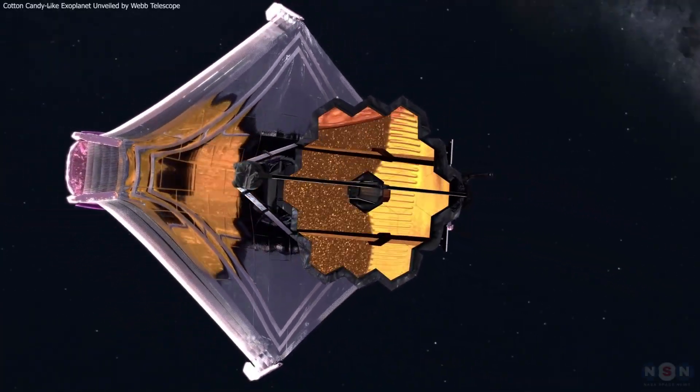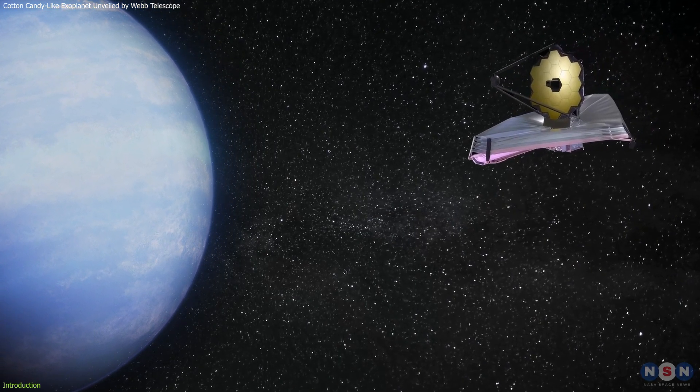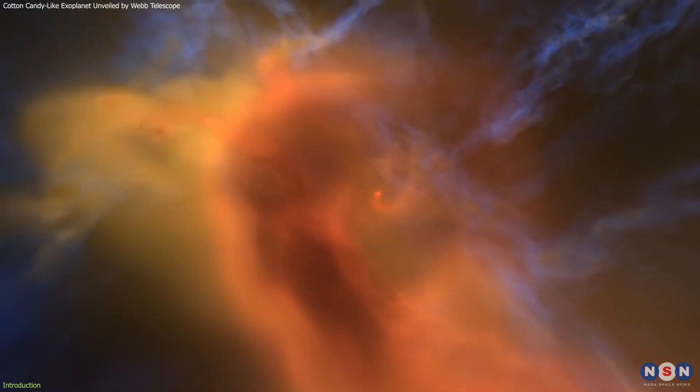The James Webb Space Telescope has revealed fascinating details about WASP-107b, a distant exoplanet often likened to cotton candy. These groundbreaking discoveries challenge our traditional views on planetary formation and evolution.